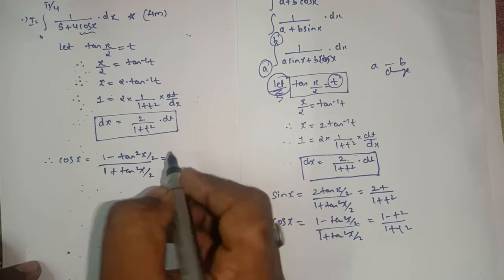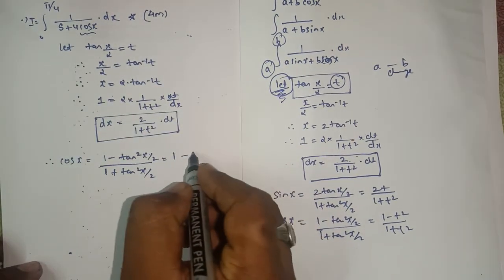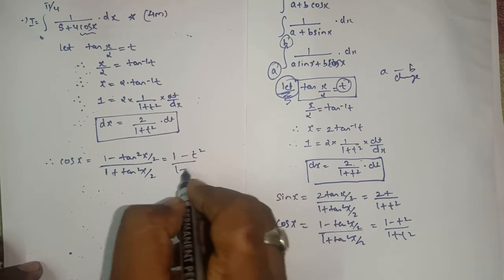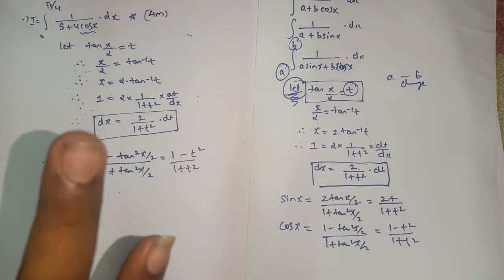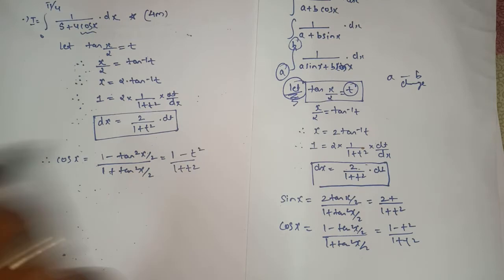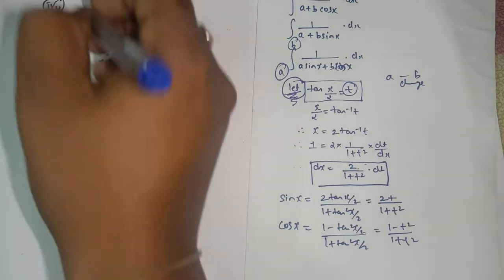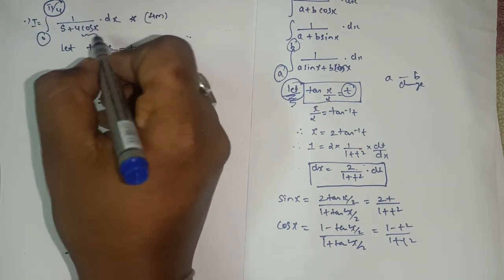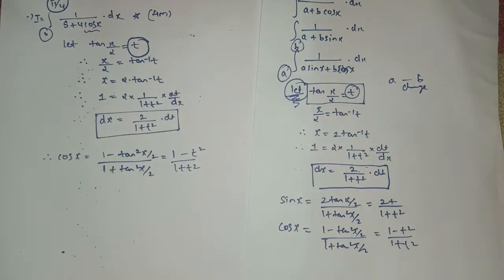So in simple language: when x = 0, t = 0; and when x = π/2, t = 1. After this, the integral will change — the limits of the integral will change. Before it was 0 to π/2 for x; now it becomes 0 to 1 for t. Next, in the integrand: 5 + 4cosx. In place of cosx, we write (1−t²)/(1+t²), and in place of dx we write 2/(1+t²) · dt.